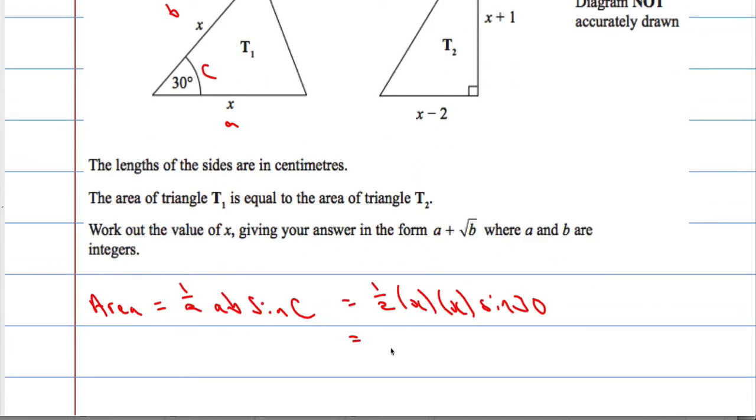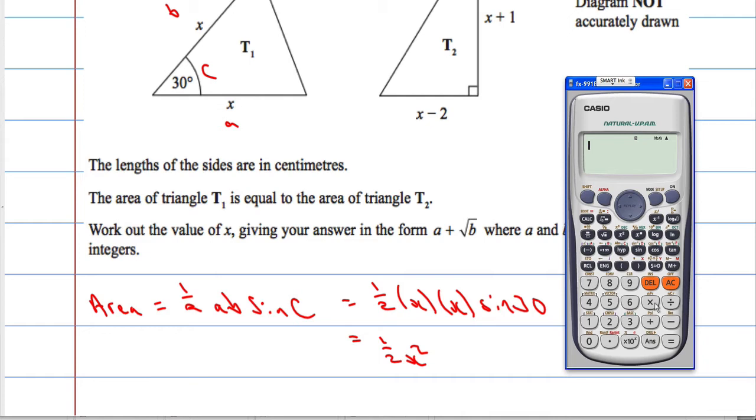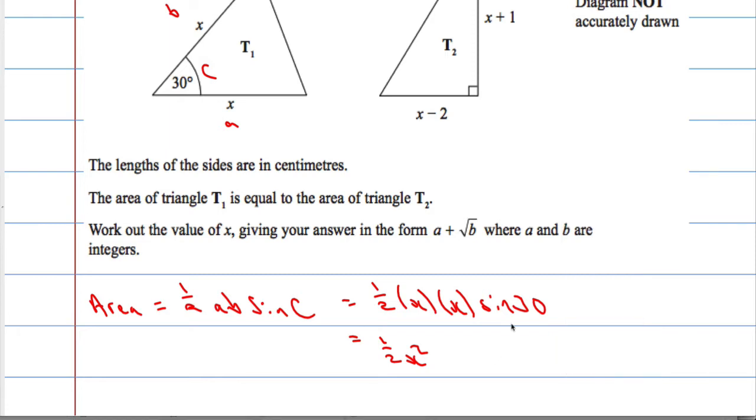So it's going to be half times x times x times sine 30. That's going to be a half x squared and sine of 30. Check with your calculator, sine of 30 is a half. So it's a half times a half x squared, which is a quarter x squared. So that's the area of T1.